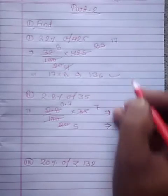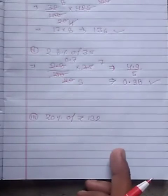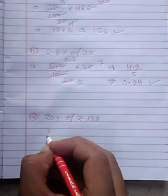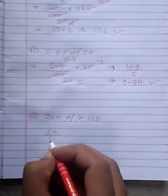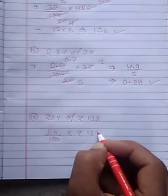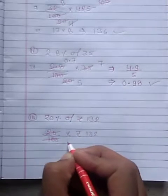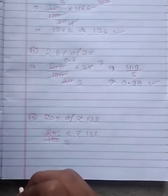Clear? This is our answer. This one see this question. 20% of 130 rupees. So, 20 upon 100, remove this symbol into rupees 132. 20 to 100, reduce 5 times.